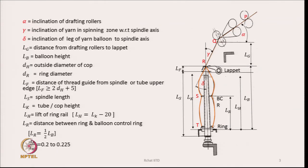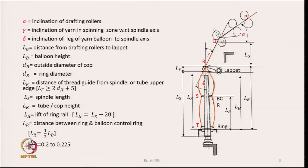Looking at the symbols on the left side of the diagram, we try to locate those symbols on the right side to understand what they indicate. The angle alpha is the inclination angle of the drafting rollers. Angle gamma is the inclination of the yarn in the spinning zone with respect to the spindle axis. Angle delta is the inclination of the leg of the yarn balloon to the spindle axis. Dimensions lg, lb, and lh are also shown in the diagram.